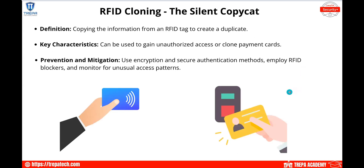RFID cloning — the 'silent copycat.' When physical access control systems use badges and proximity readers to secure areas, an attacker who steals a badge can clone its RFID signature and use that clone to gain unauthorized access to secure areas. This technique also works with payment cards such as credit cards and debit cards.